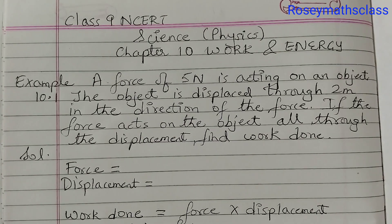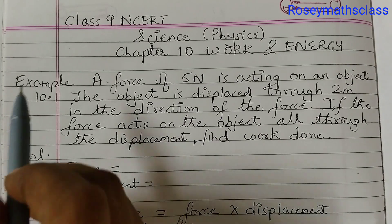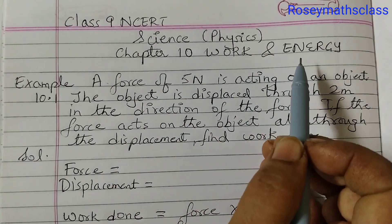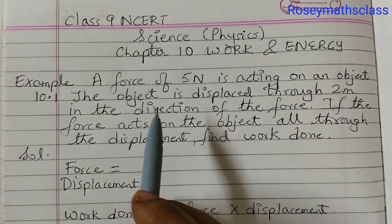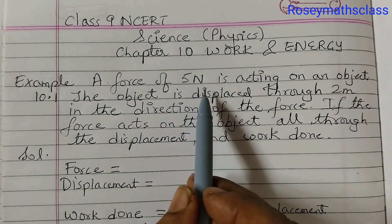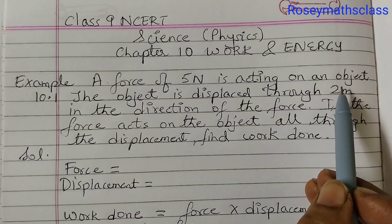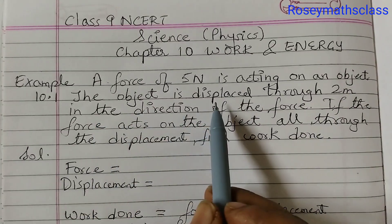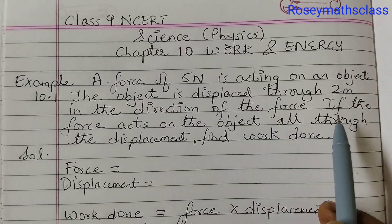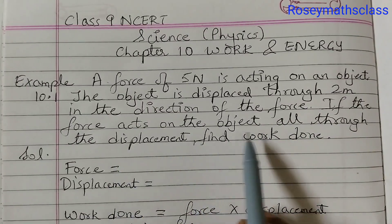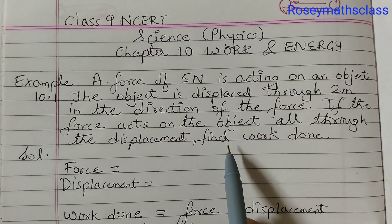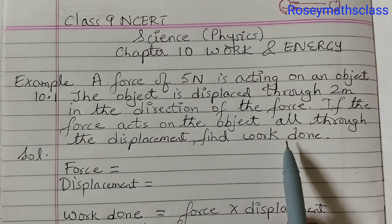Hello students. In this video we shall discuss example number one of chapter 10, Work and Energy. It's a numerical of physics. A force of 5 Newton is acting on an object. The object is displaced through 2 meters in the direction of the force. If the force acts on the object all through the displacement, find the work done.